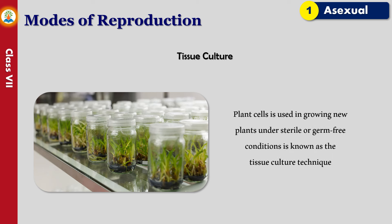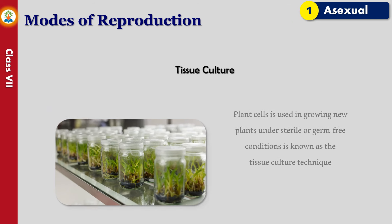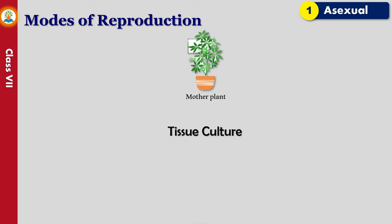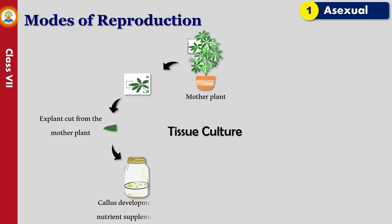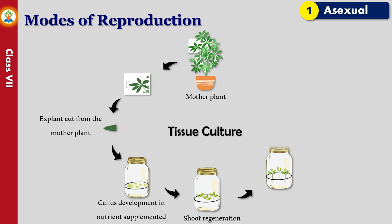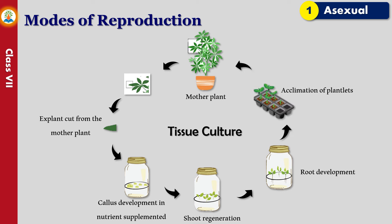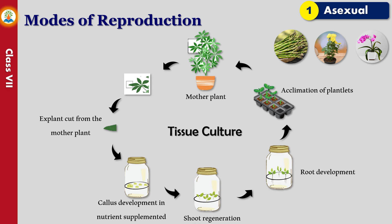The plant cells used in growing new plants under sterile or germ-free conditions is known as the tissue culture technique. In this method, some tissue is cut from the growing tip of a plant. This tissue is then separated into cells, which are put in a nutrient medium containing inorganic salts, sugars, vitamins, and hormones required for growth and differentiation. Cells are allowed to grow into small plantlets in controlled conditions, which are then transferred to pots in soil. Plants such as asparagus, chrysanthemum, and certain orchids can be grown through this method.